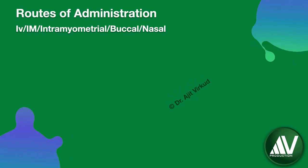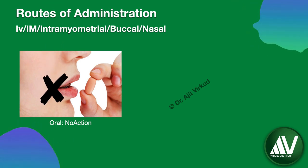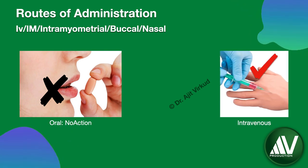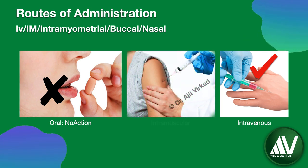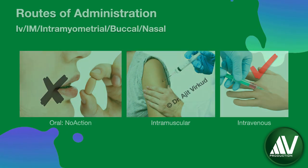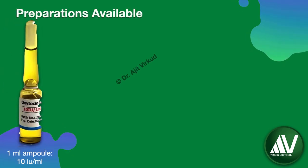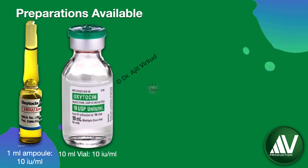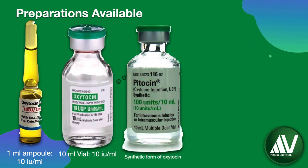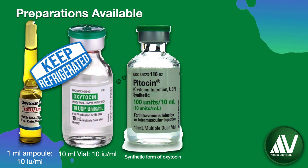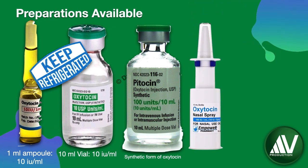When given orally, oxytocin has no action because, being a protein, it is destroyed by gastric acid. Oxytocin is mainly administered by the intravenous route but can also be given intramuscularly or by intramyometrial injection. In the market, oxytocin is available as a 1 ml ampoule or 10 ml vial for intravenous use. One important precaution: oxytocin must be kept refrigerated and not at room temperature. Nasal sprays and buccal tablets are also available.